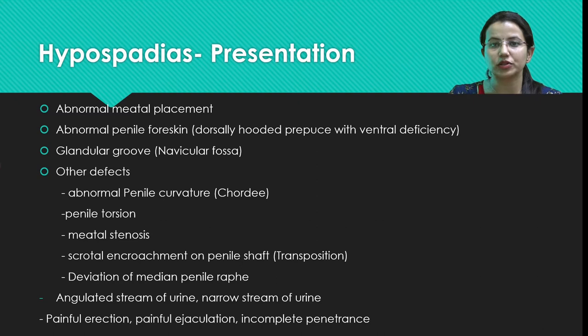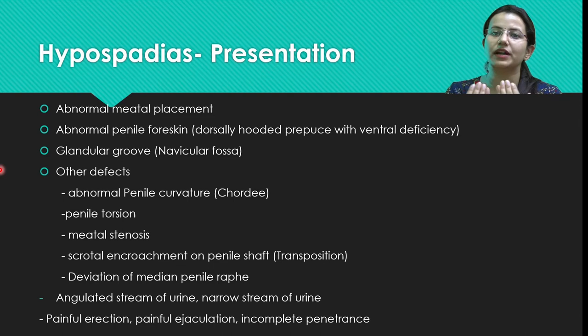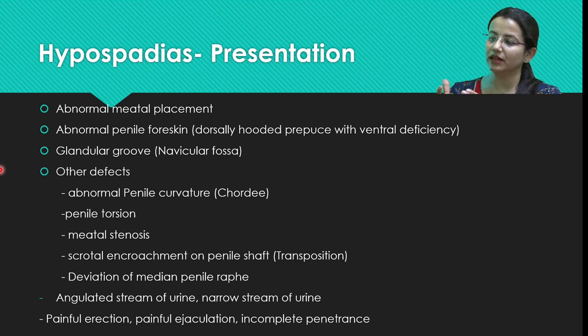In hypospadias, the foreskin is dorsally hooded because the urethral folds have not completely fused in the midline. The prepuce skin, also developing simultaneously with the penile shaft, is deficient on the ventral aspect, giving the appearance of a hooded prepuce resembling a cobra head. The prepuce skin is only present on the dorsal aspect.